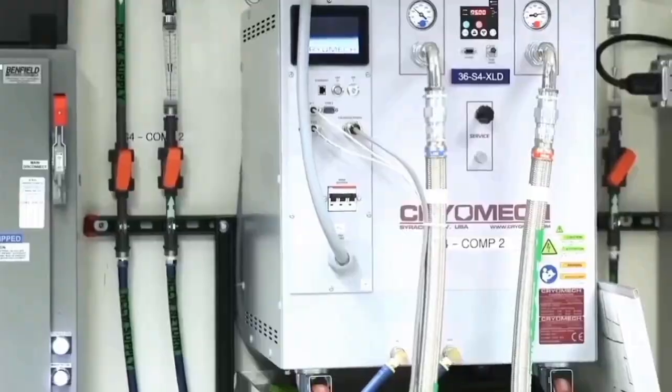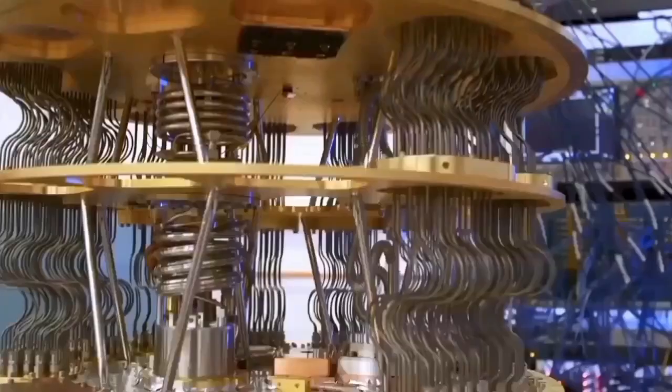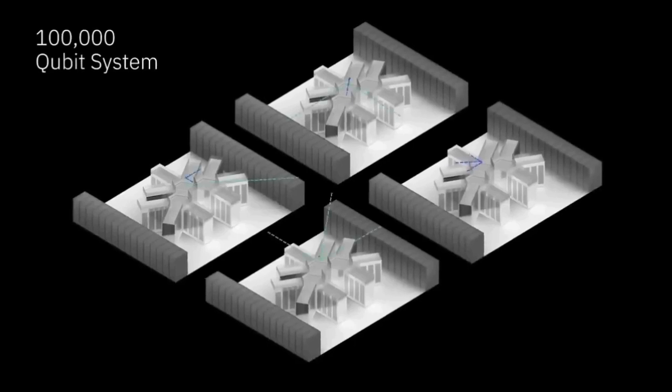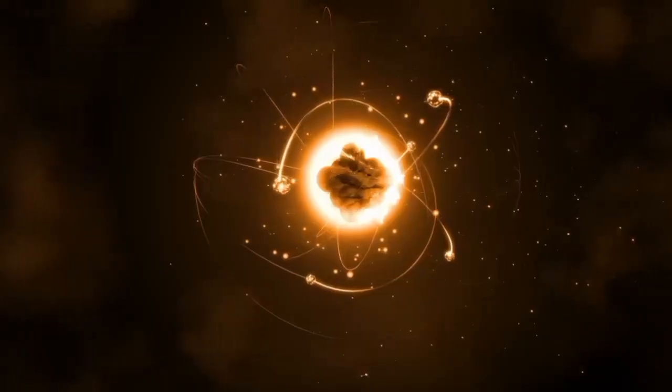Superposition allows qubits to exist in multiple states at once, while entanglement links qubits in a way that the state of one qubit can instantaneously affect another, even if they are separated by vast distances. These quantum properties make quantum computers immensely powerful and capable of solving complex problems that are beyond the reach of classical machines. Now, let's talk about Willow. Google had recently introduced Willow as its newest quantum chip, and it represents a significant leap forward in the pursuit of practical quantum computing.